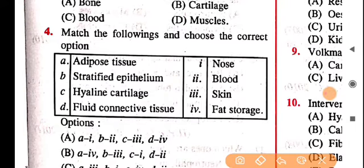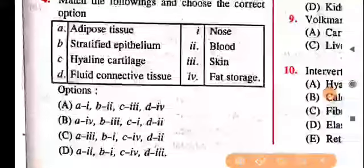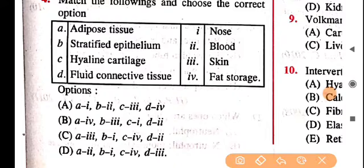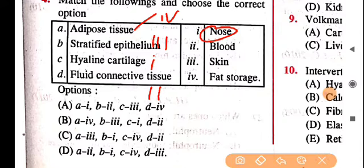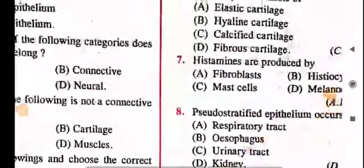Next: match the following and choose the correct option. Adipose tissue does fat storage — it matches with option 4. Stratified epithelial tissue — you should recall that stratified epithelial tissue is a part of skin, so that matches with option 3. Hyaline cartilage is a part of the nose — that matches with option 1.